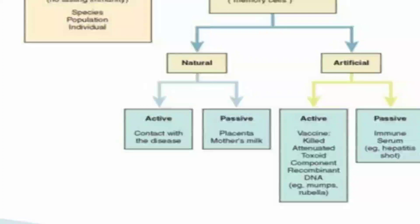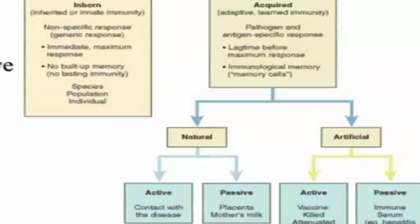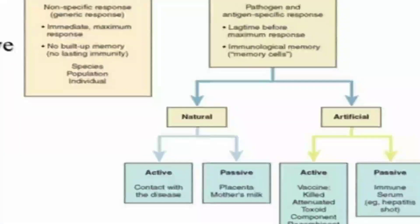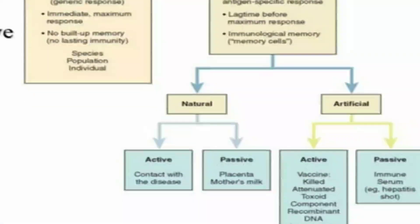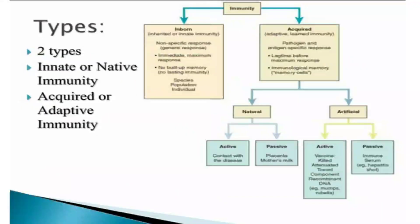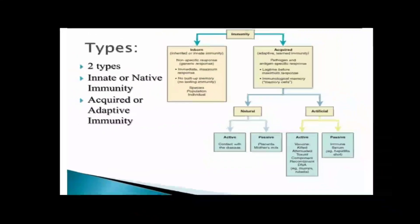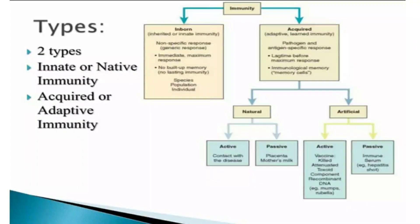In artificial passive immunity, immune serum is given directly, such as hepatitis B immune serum. So acquired or adaptive immunity is divided into natural and artificial, each further divided into active and passive forms. That completes the seventh question on types of immunity.